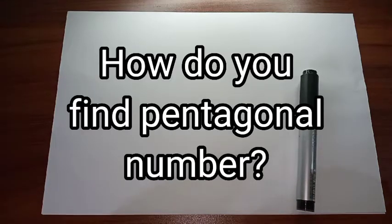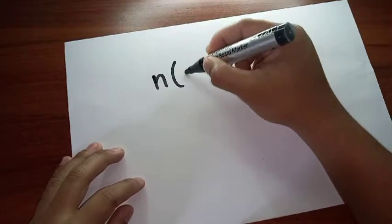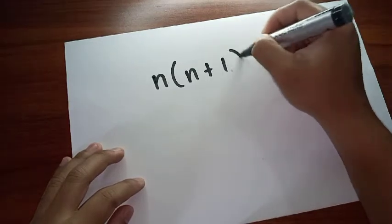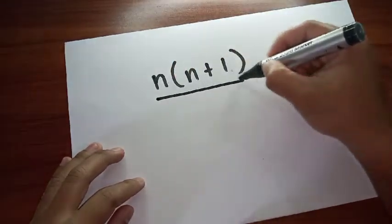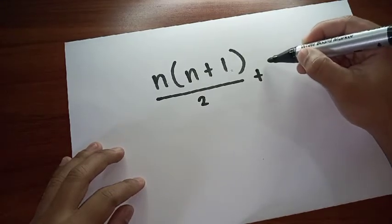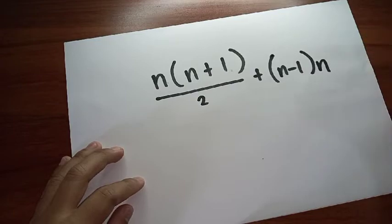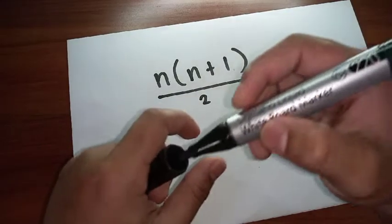How do you find a pentagonal number? The formula in finding the pentagonal number is n times n plus 1 over 2 plus n minus 1 times n. This is the formula in finding the pentagonal numbers.